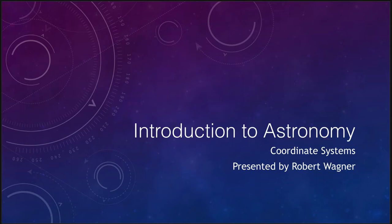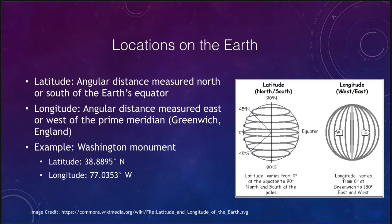Let's start off looking at the earth first. How do we determine positions on the earth? Well, we use two different coordinates: we use latitude and longitude, and specifying those two coordinates allows us to determine exactly where an object is on the surface of the earth.